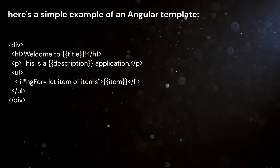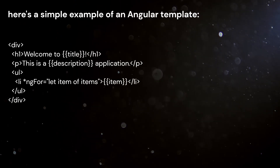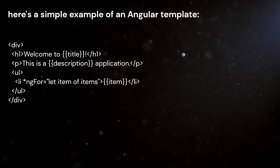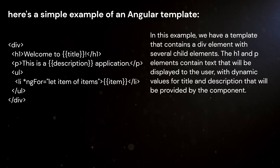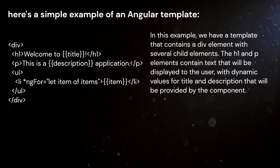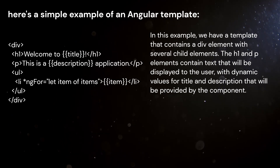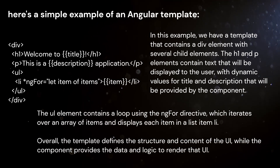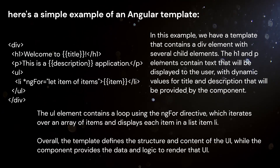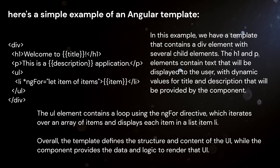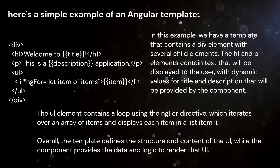Here is a simple example of an Angular template. In this example, we have a template that contains a div element with several child elements. The H1 and P elements contain text that will be displayed to the user, with dynamic values for title and description provided by the component. The UL element contains a loop using the ngFor directive, which iterates over an array of items and displays each item in a list.